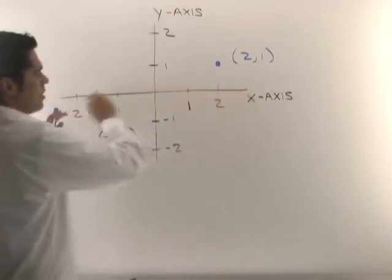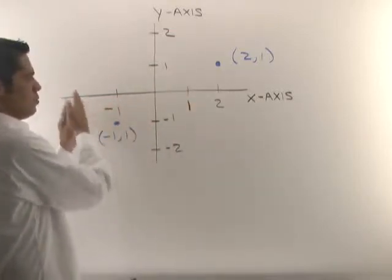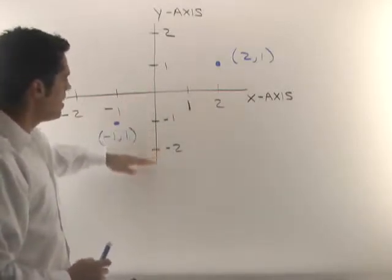We label these like number lines. On the x-axis, as you move from left to right, your numbers get larger. On the y-axis, as you move from down to up, your numbers get larger.